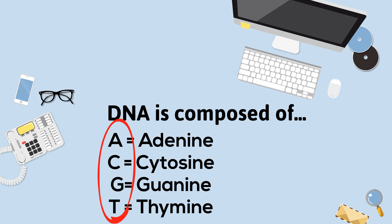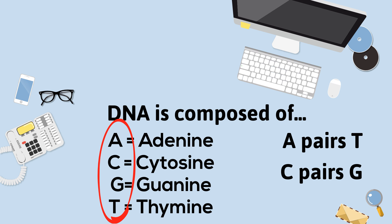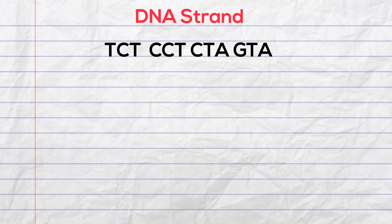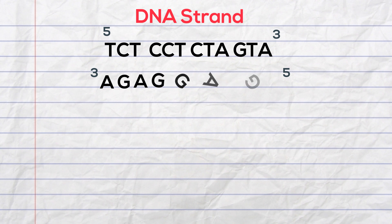A always pairs with T, and C pairs with G. So if we have this strand and it synthesizes from 5 to 3, for a complementary strand, T will pair up with A, C with G, T with A, and so on.